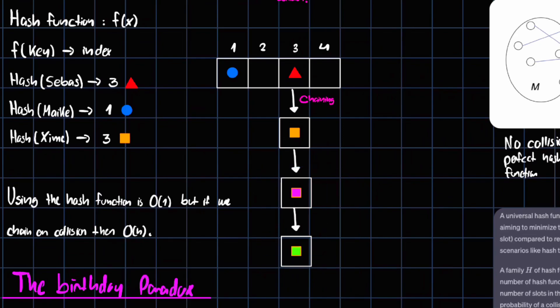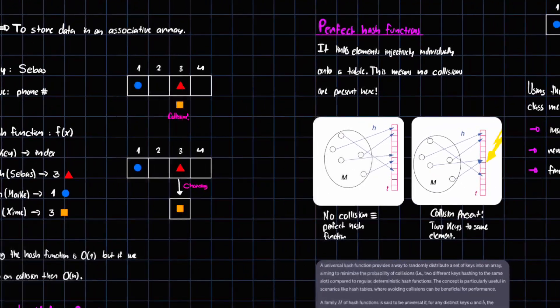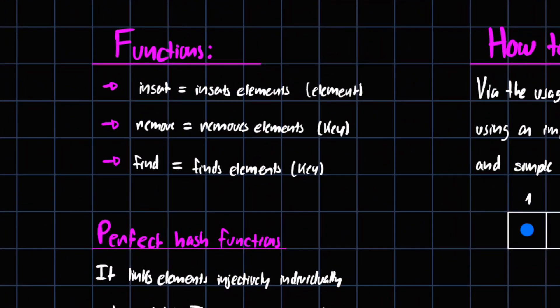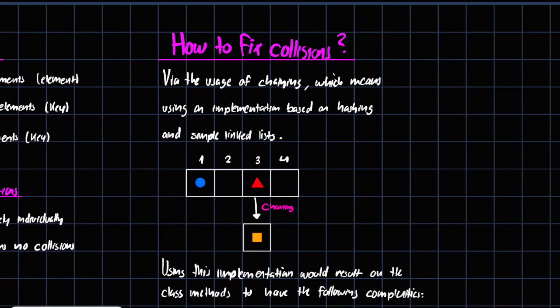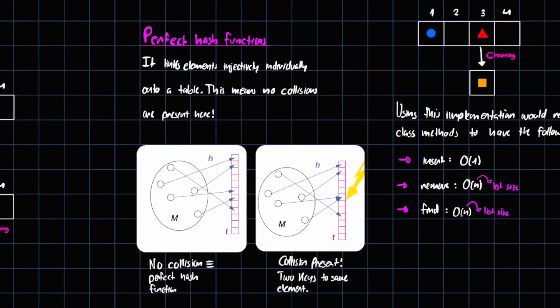Now let's understand the main functions of hash tables. There are three main functions we need to implement: insert, which inserts elements using an element as the value; remove, which removes elements and takes the key as an argument; and find, which finds an element and also takes the key as the argument.